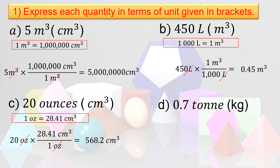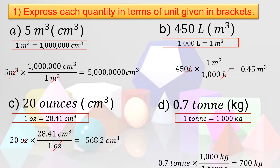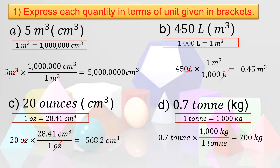Now let us convert 0.7 tons to kilograms. We know that 1 ton equals 1,000 kilograms. So: 0.7 tons times 1,000 kilograms over 1 ton. Cancel the tons, then multiply 0.7 times 1,000, which equals 700 kilograms.